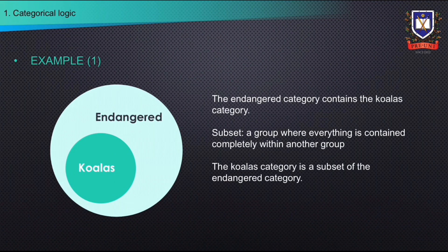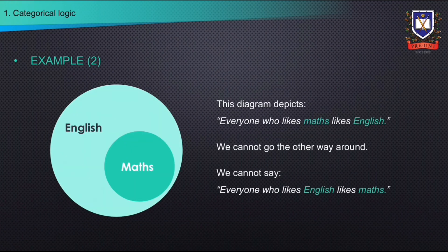We can represent this set of claims in a diagram. The endangered category contains the koalas category. A subset is a group where everything is contained completely within another group; we can therefore say that the koalas category is a subset of the endangered category. Here is another example that depicts the statement: everyone who likes maths likes English. We cannot go the other way around and say that everyone who likes English likes maths.